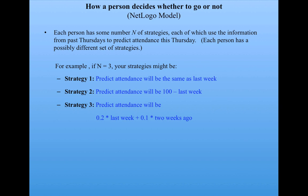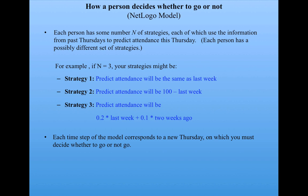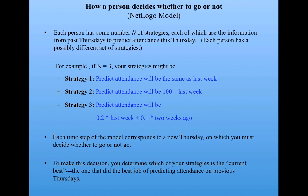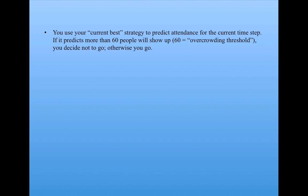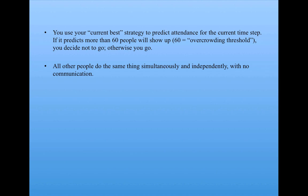An important point is that the environment might change, so the strategy that is best at predicting might change also, and the agents have to be able to adapt. Each time step corresponds to a new Thursday, on which you must decide whether to go or not. First you determine which of your strategies is the current best — the one that did the best job of predicting actual attendance on previous Thursdays. You use that strategy to predict attendance for this Thursday: if it predicts more than 60, you don't go; if 60 or less, you do go. All 100 people are doing this simultaneously and independently with no communication.